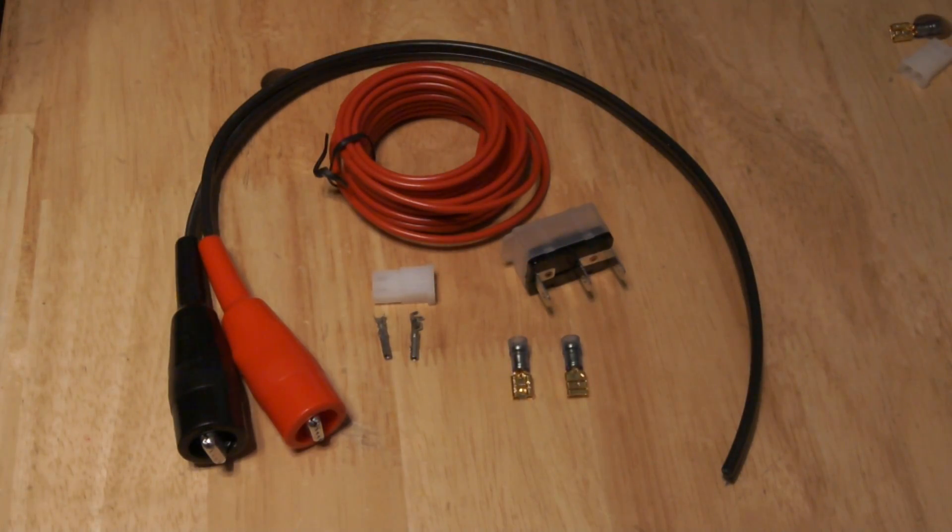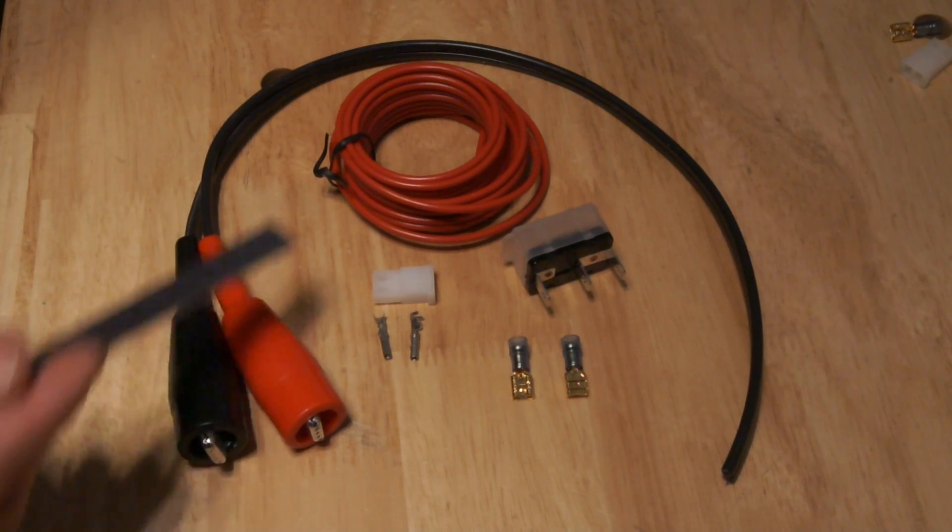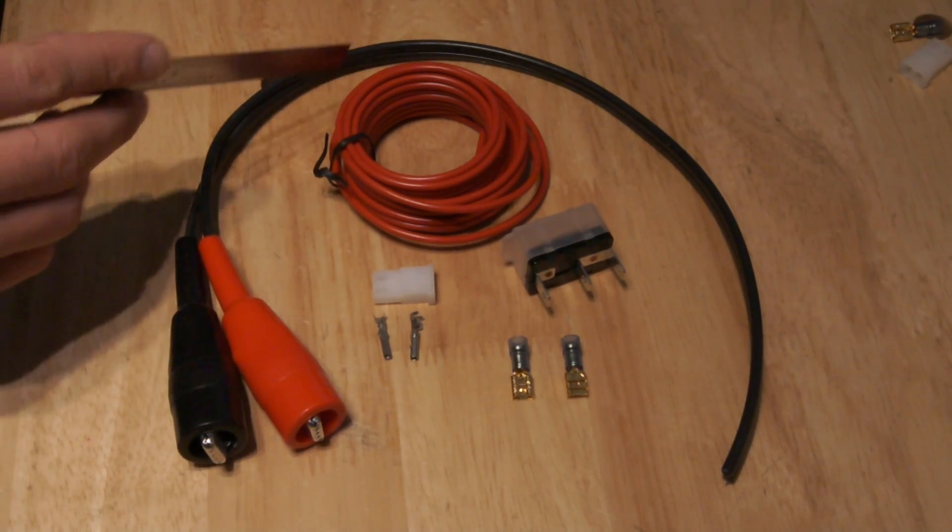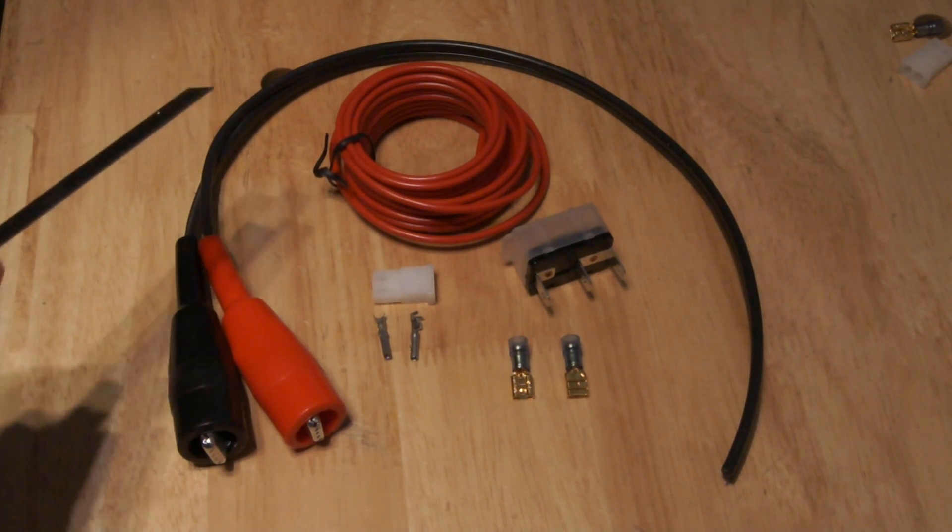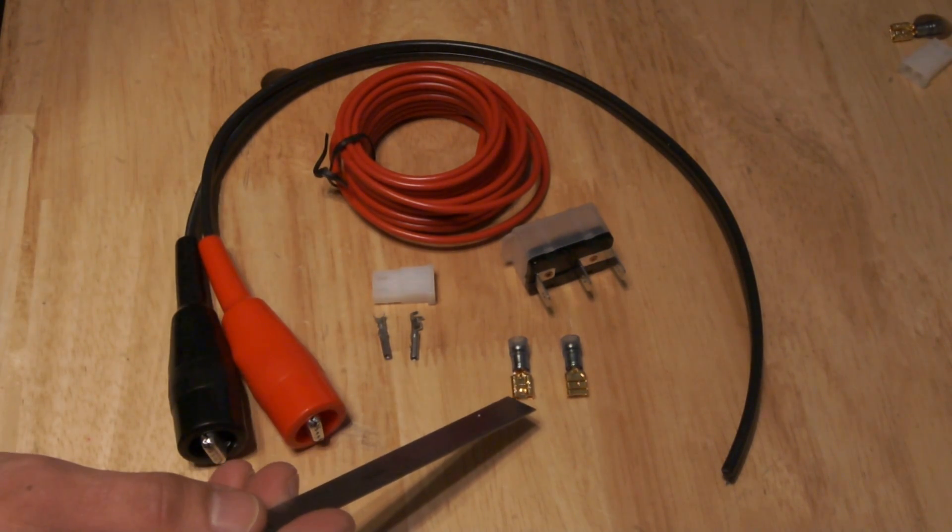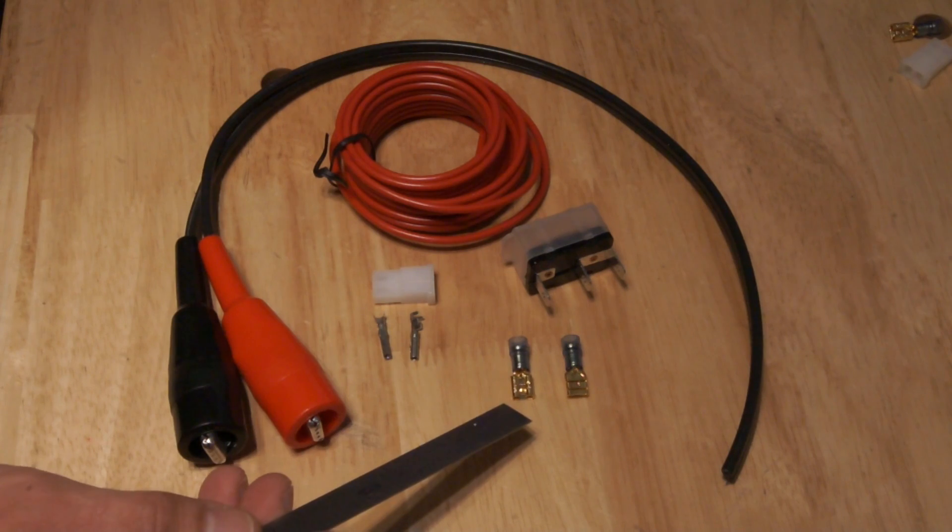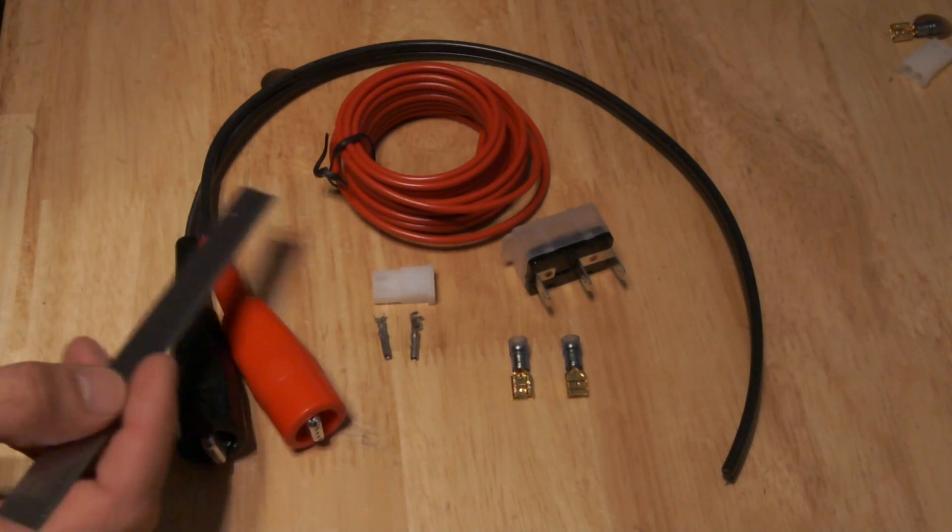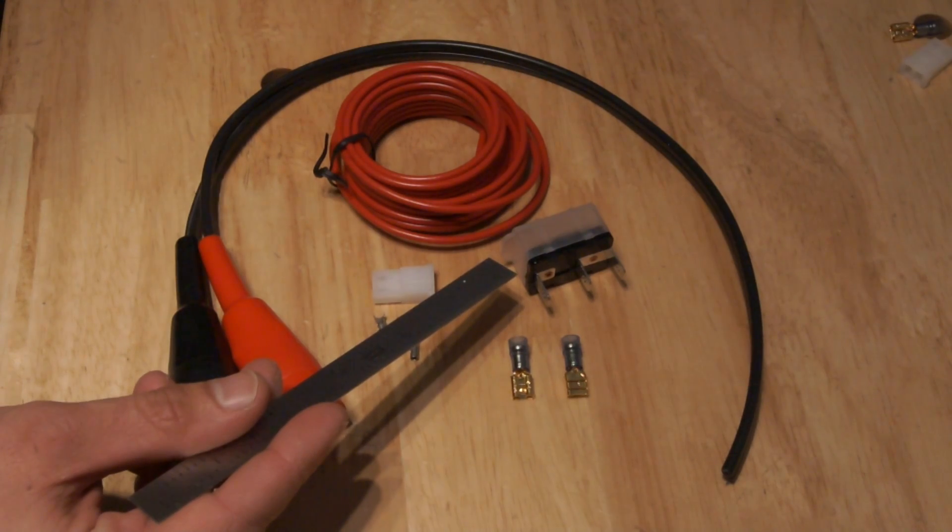Here's an overview of the components. We have our 14-2 wire already connected to the alligator clips. The 18 gauge wire is going to be cut down for the jumper. We have two quarter inch flag connectors, a male AML connector with the associated pins, and our 15 amp auto reset circuit breaker.